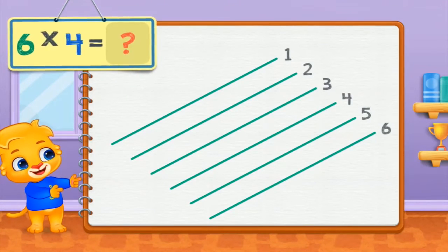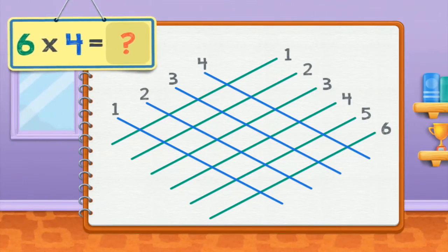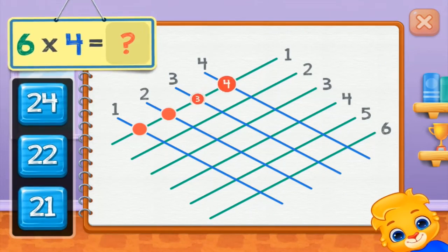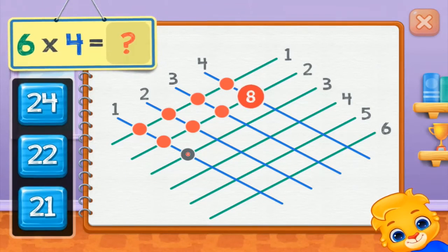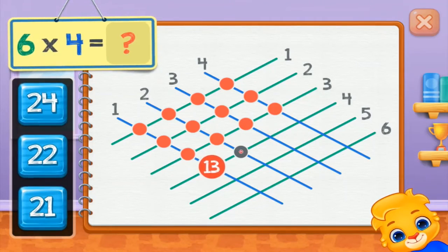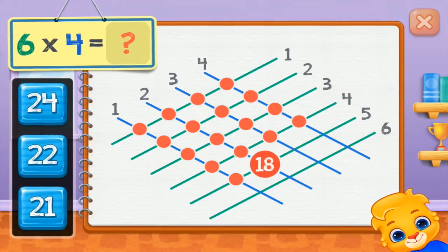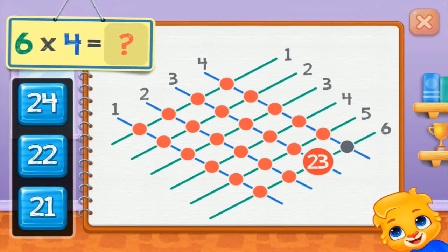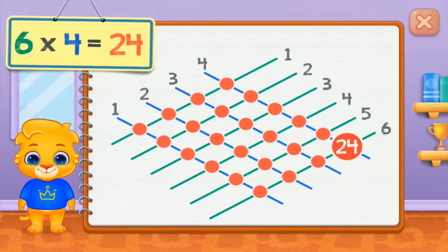Six times four equals one, two, three, four, five, six, seven, eight, nine, ten, eleven, twelve, thirteen, fourteen, fifteen, sixteen, seventeen, eighteen, nineteen, twenty, twenty-one, twenty-two, twenty-three, twenty-four. Six times four equals twenty-four.